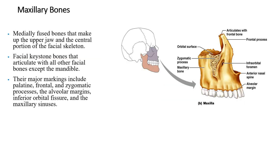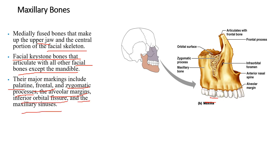The maxillary bones are actually fused bones that make up the upper jaw and the central portion of the facial skeleton. They're the facial keystone bones that articulate with all the other facial bones except the mandible — though the upper and lower teeth do articulate with each other. Their major markings include the palatine, frontal, and zygomatic processes, the alveolar margins, the inferior orbital fissure, and the maxillary sinuses.